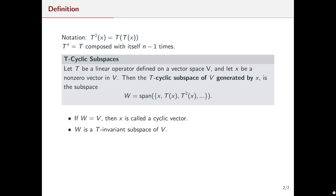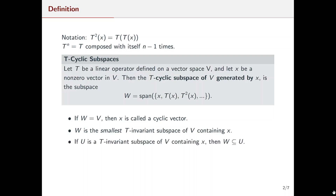A key property of cyclic subspaces is that they are T-invariant subspaces of V. In particular, they are actually the smallest T-invariant subspace of V containing x. So if we come across a subspace U that is also a T-invariant subspace of V and it happens to contain x, then we know that it also has to contain W as well.